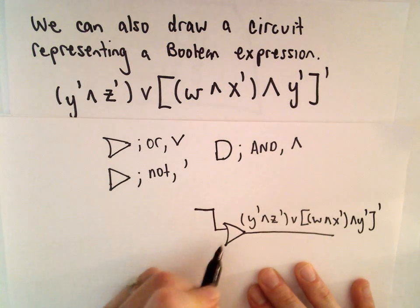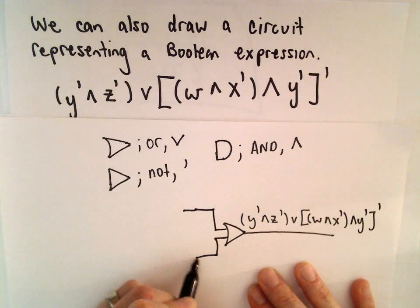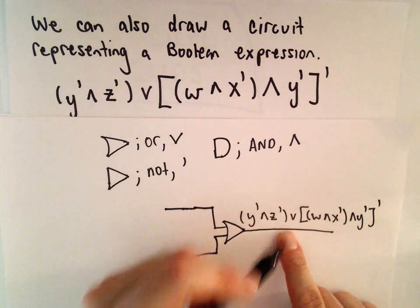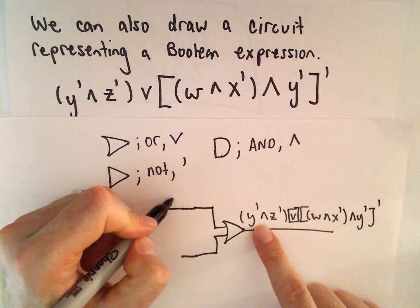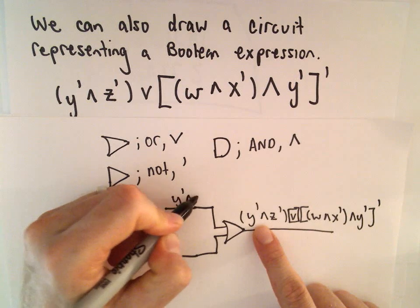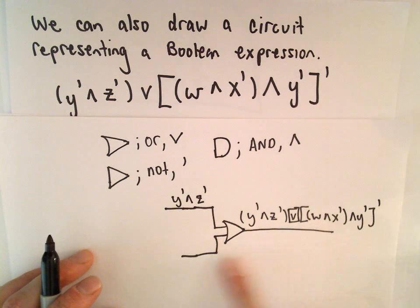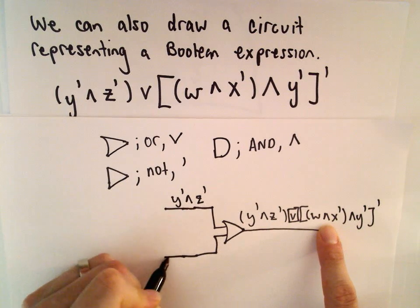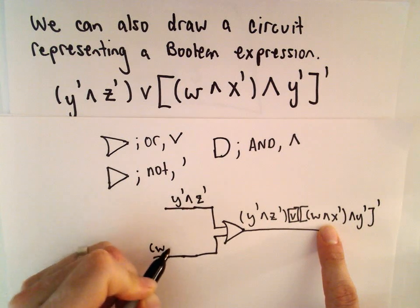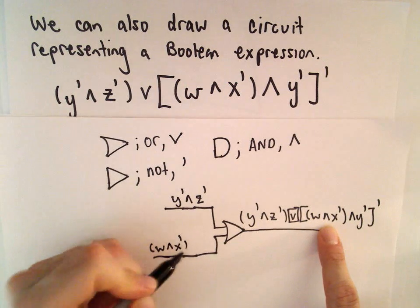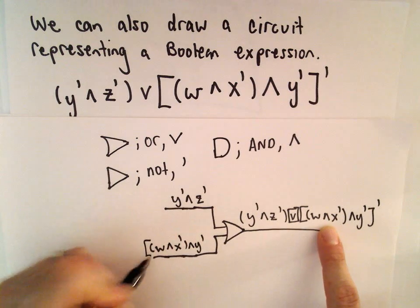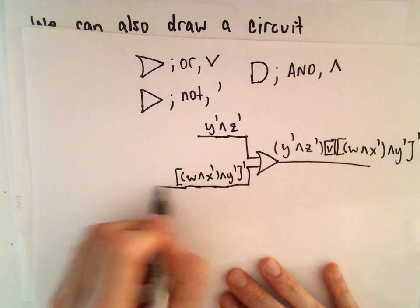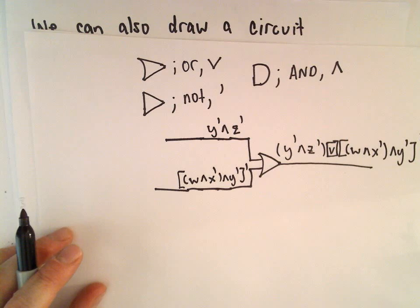We're going to have two inputs coming into the OR gate. One statement I want to be NOT Y and NOT Z. And the other statement that I want entering our OR gate will be the second expression here: W and NOT X and NOT Y, and we're going to NOT that whole statement. We're basically just going to sort of peel things off one layer at a time.